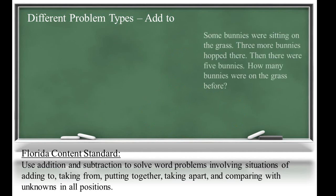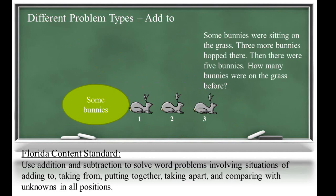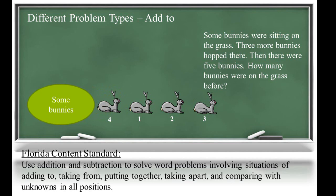Our last add-to problem, some bunnies were sitting on the grass. Three more bunnies hopped there. Then there were five bunnies. How many bunnies were on the grass before? In this problem, the start is unknown. Students have to work backwards to determine that since three bunnies came and the end result was five, there must have been two bunnies to start with because two plus three is five.